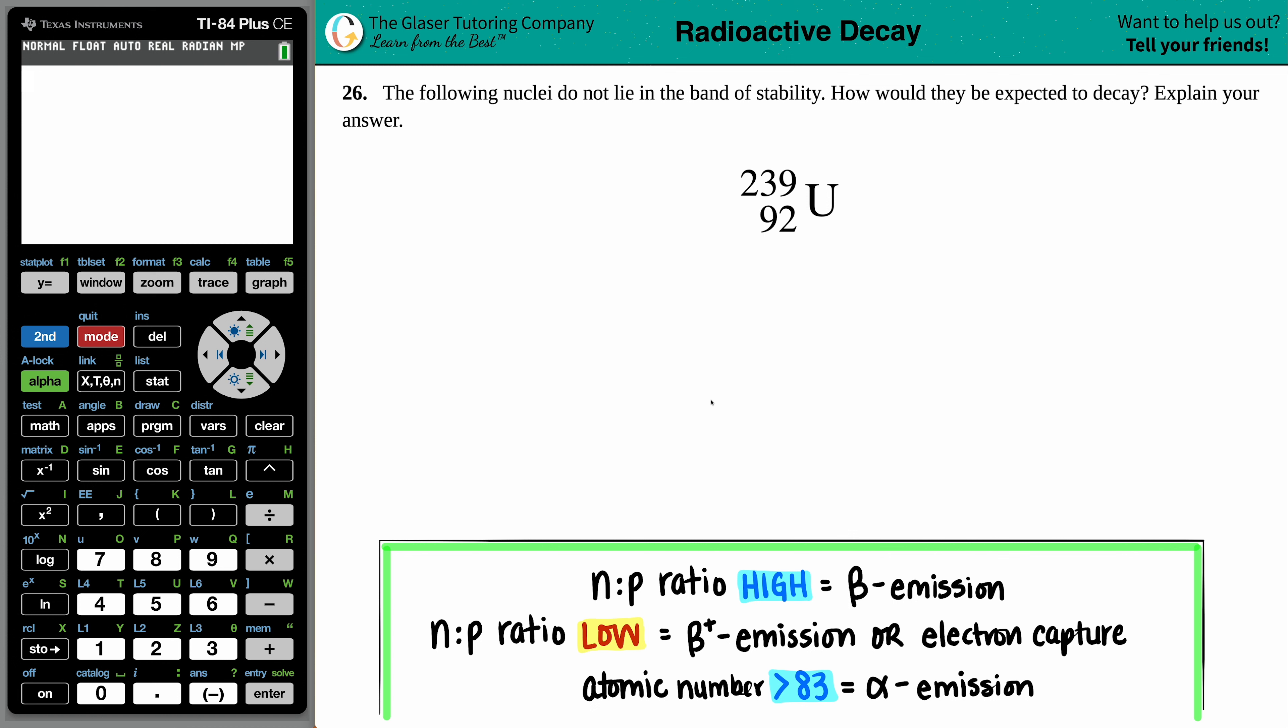Number 26: The following nuclei do not lie in the band of stability. How would they be expected to decay? Explain your answer. All right, so we got big bad uranium here, uppercase U, with a mass number of 239. That's the total number of protons and neutrons, and it's got an atomic number of 92.